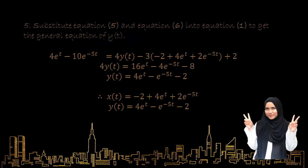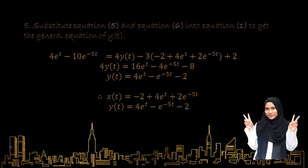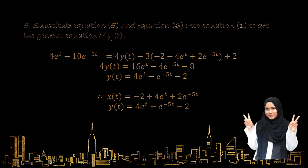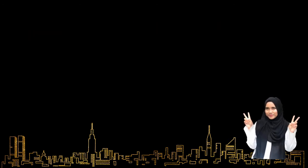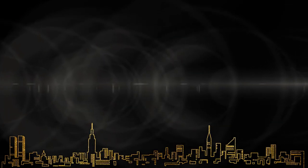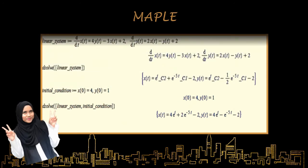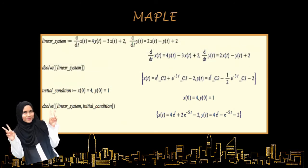We substitute equation 5 and equation 6 into equation 1 to get the general solution Y. Our final general solution for X is: X equals negative 2 plus 4e^t plus 2e^(−5t). And the general solution for Y is: Y equals 4e^t minus e^(−5t) minus 2. We use Maple as our computer-aided solution, entering the code, and the final answer from Maple matches our manual solution.